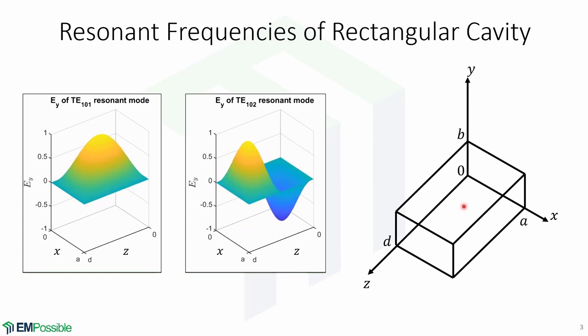as well as in the dielectric material that may fill the cavity. Coupling to a cavity resonator may be by a small aperture or a small probe. There are many different resonant modes for a cavity resonator, as shown in these animations. What you can see in this animation is the Y component of the electric field of a TE101 resonant mode for a rectangular cavity. And in this animation, we can see the Y component of the TE102 resonant mode.